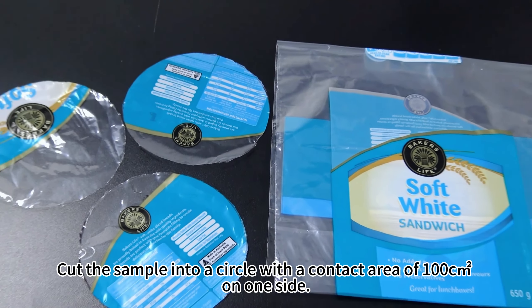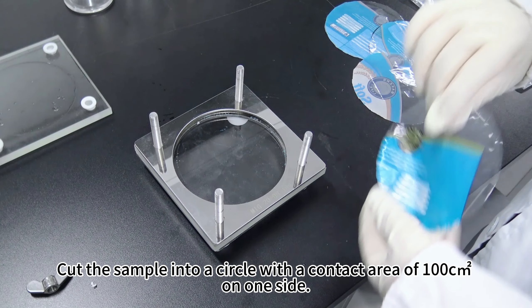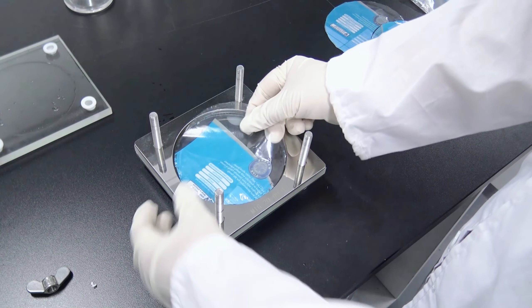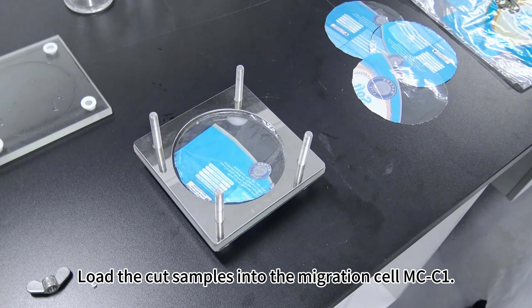Cut the sample into a circle with a contact area of 100 square meters on one side. Load the cut samples into the migration cell MC C1.